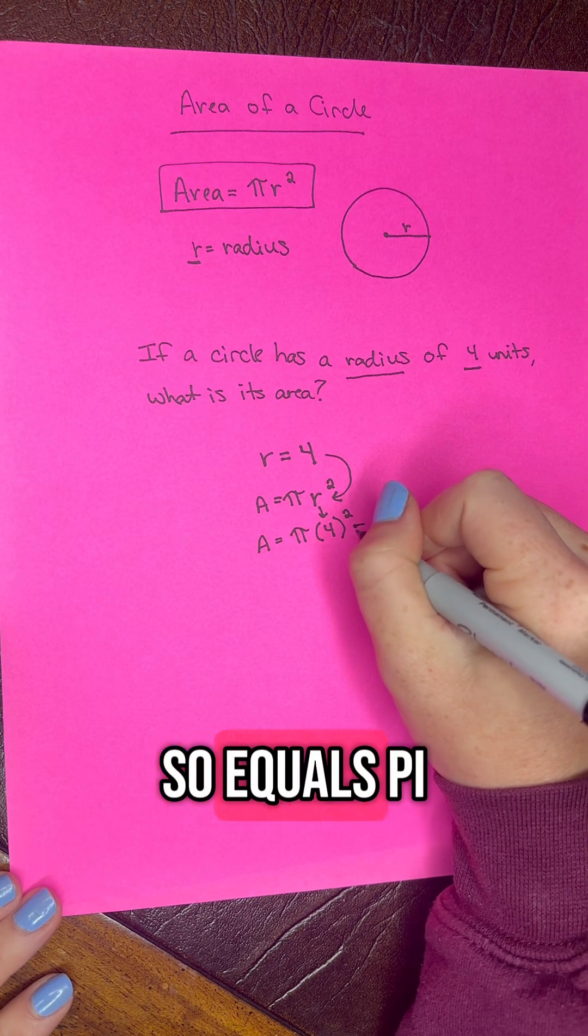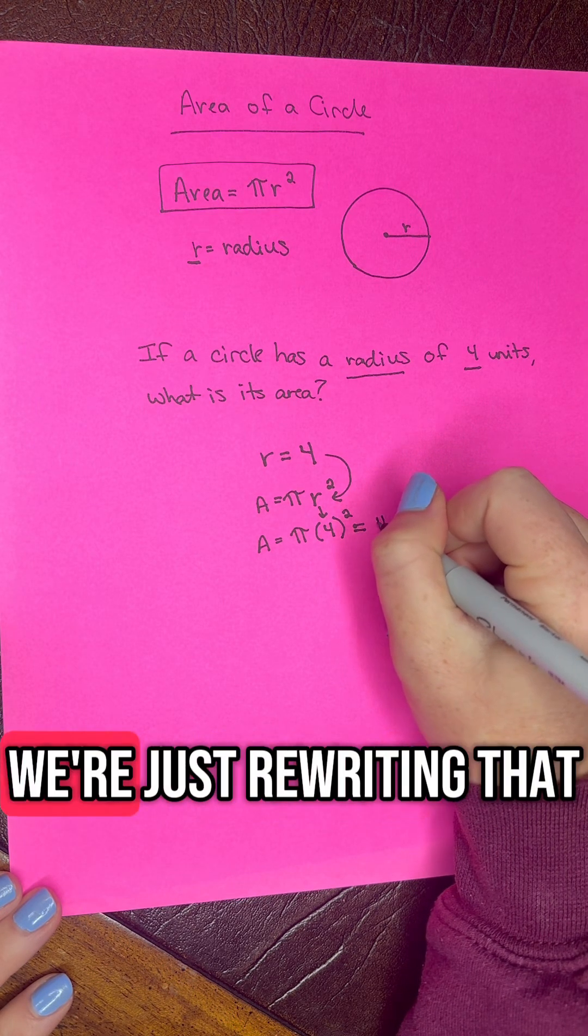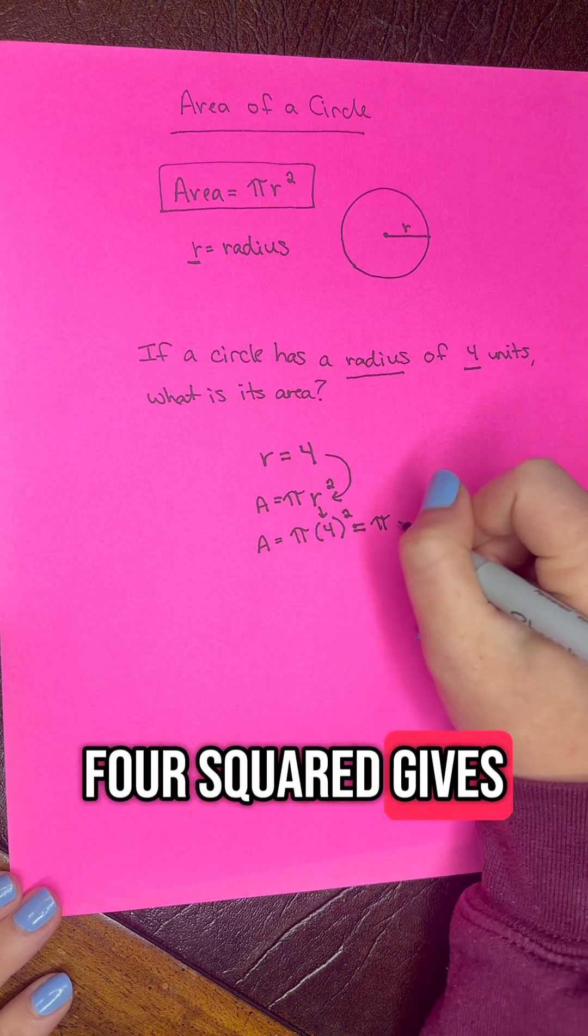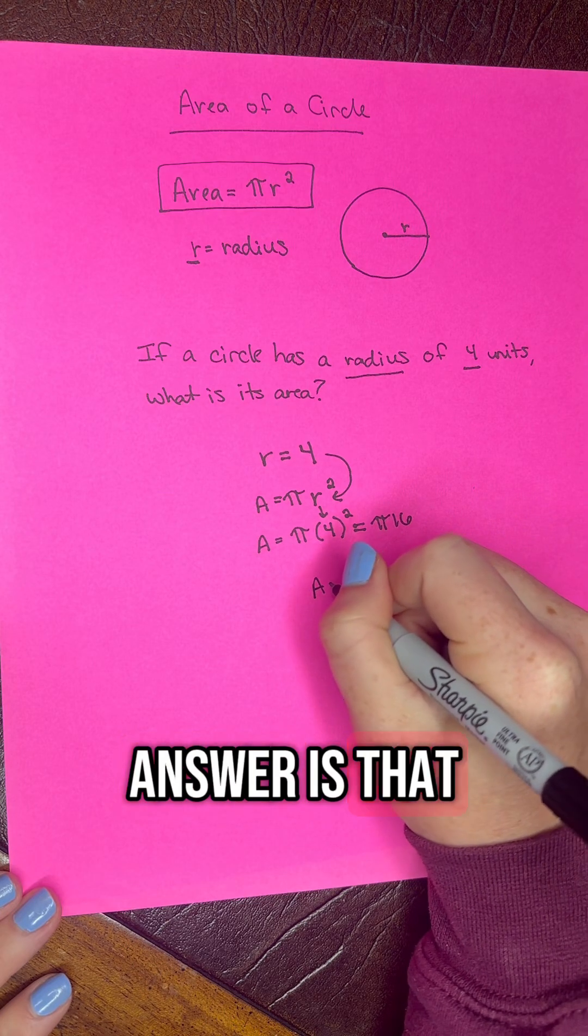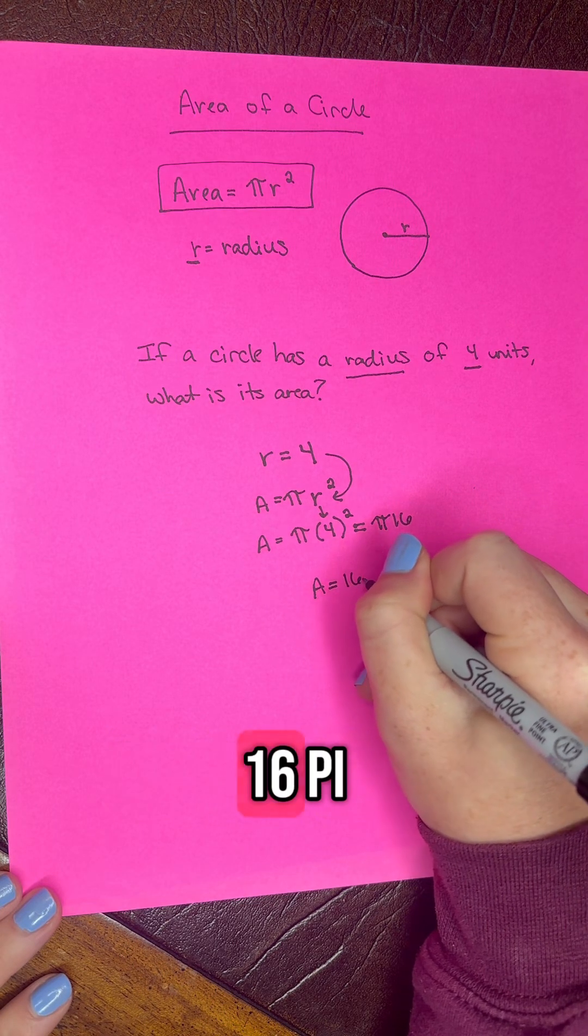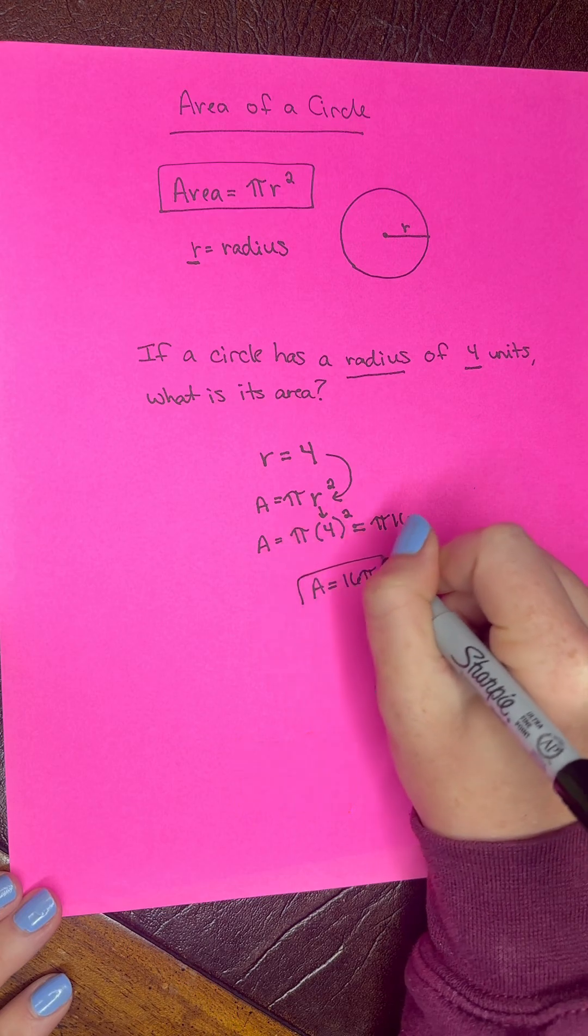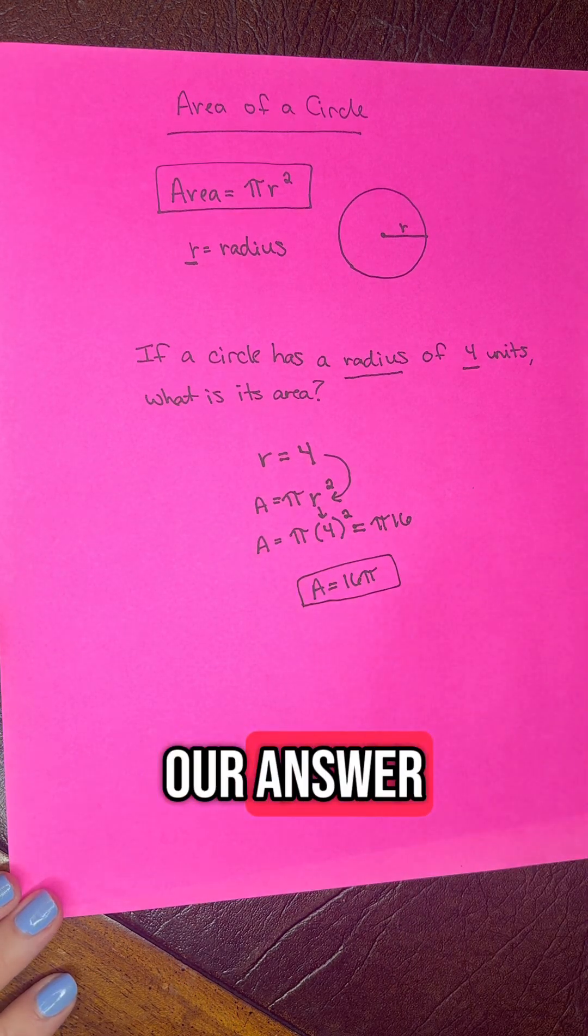Equals pi, 4 squared gives us 16. So our final answer is that our area equals 16 pi and we box our answer.